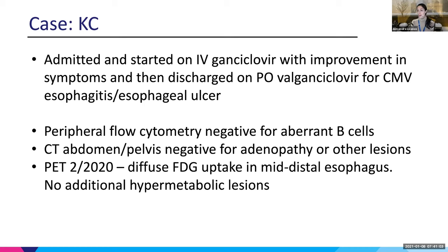To work up the possible underlying PTLD, she underwent peripheral flow cytometry which was negative. She got a CT abdomen and pelvis in addition to the CT chest she already had, which showed no adenopathy or other lesions. She also had a PET scan which just showed diffuse uptake in the mid and distal esophagus but no other hypermetabolic lesions. So basically at this point we have an isolated lesion in the esophagus with B-cell proliferation associated with EBV.